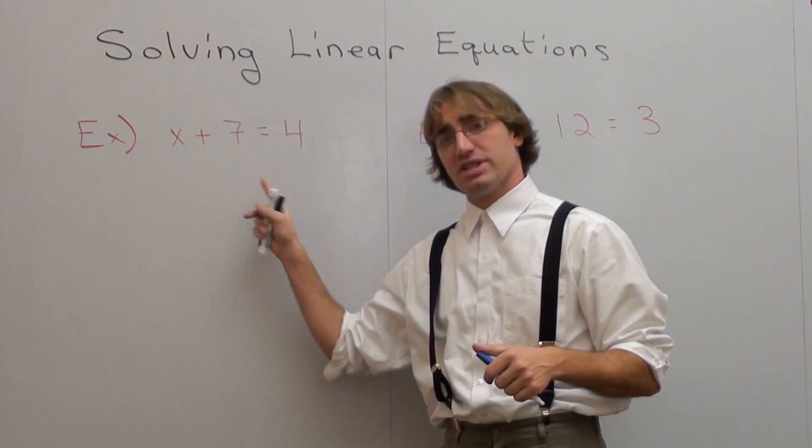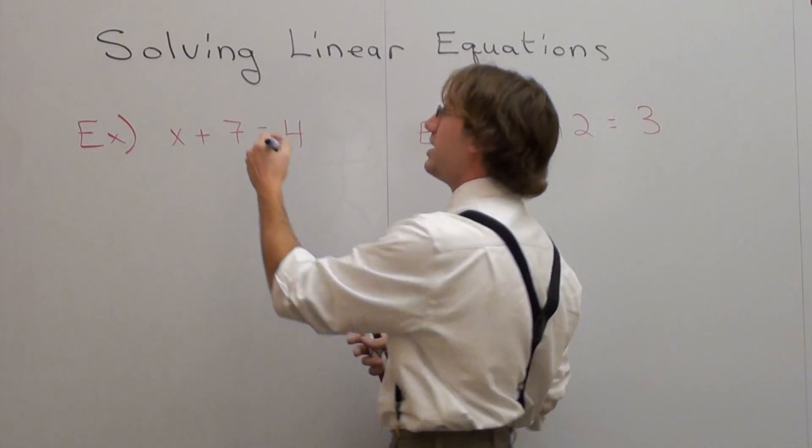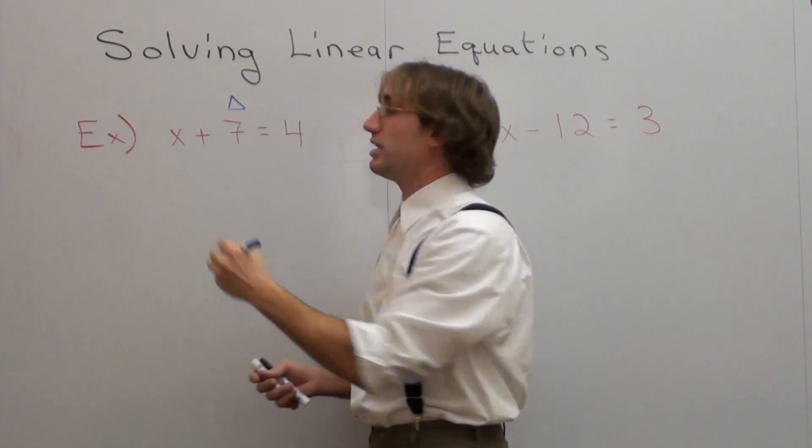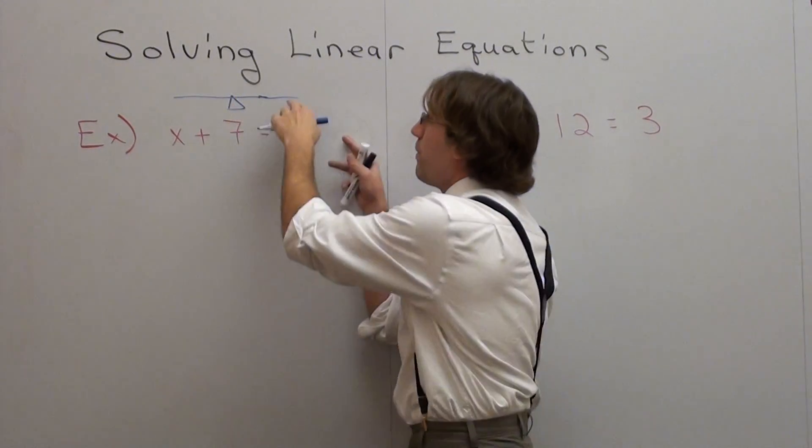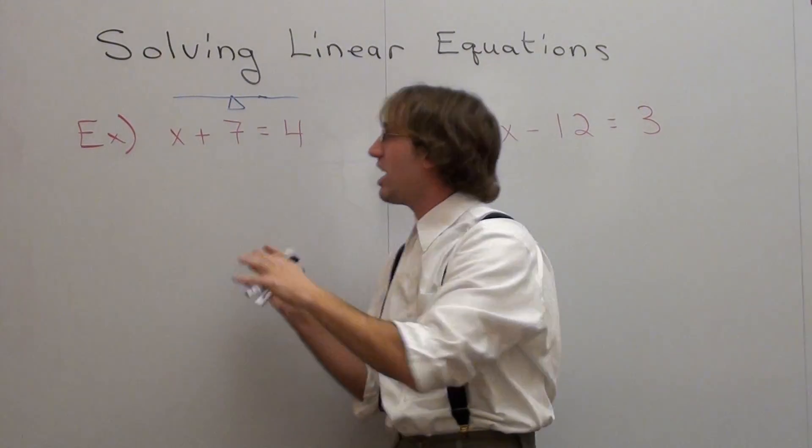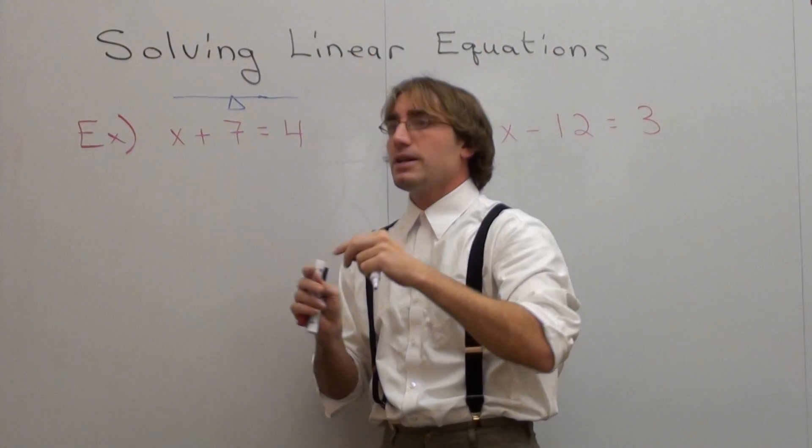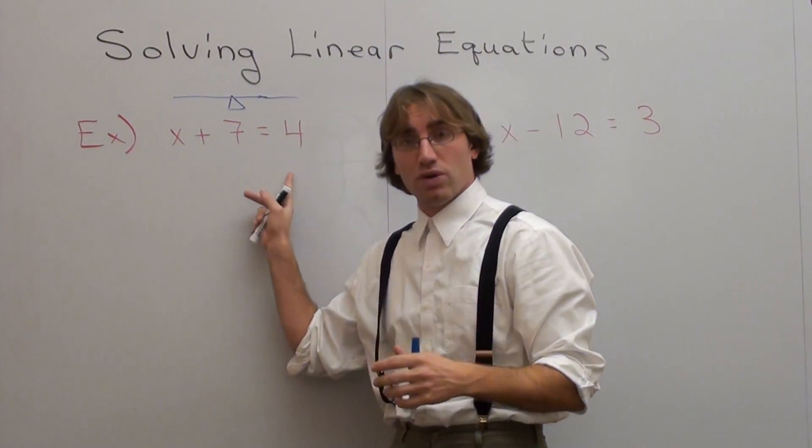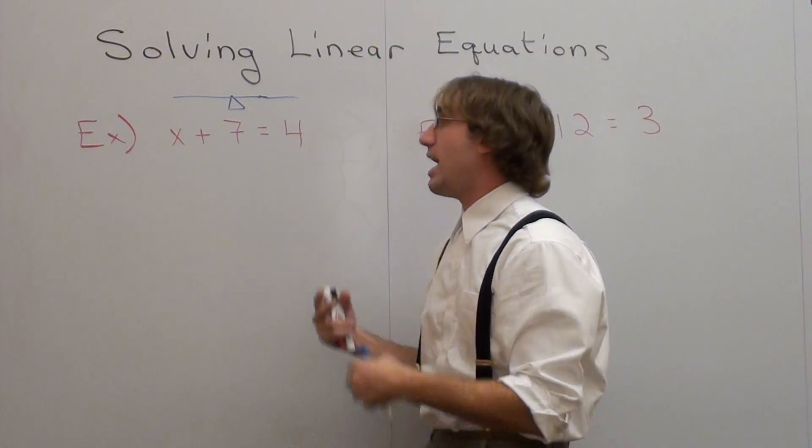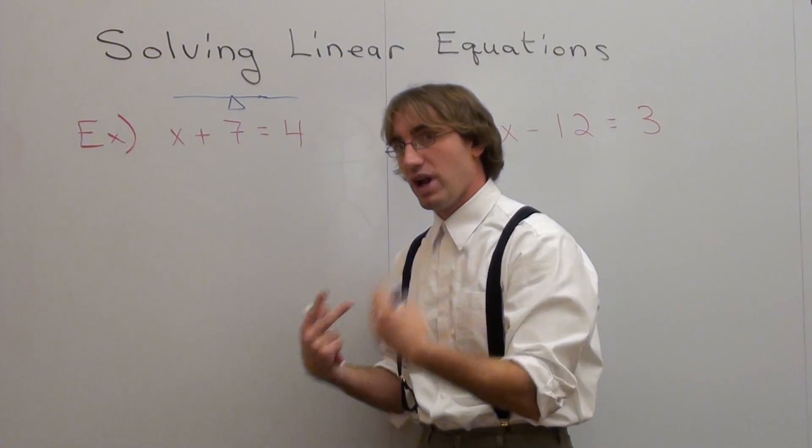So I've got this equation right here, x plus 7 equals 4. I've got this teeter-totter that I was talking about, a balanced teeter-totter. If x plus 7 is on one side, 4 is on the other side, they're balanced. But there's something that I have to do in this particular equation. I know what 7 is, I know what 4 is, I don't know what x is. I have to try to figure out what the value for x is.